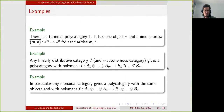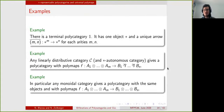I want to give some examples that will be important in this talk. First, there is a terminal polycategory. It has only one object and one polymap for each arity: given two arities M and N, there is a polymap that goes from M copies of star into N copies of star. This terminal polycategory is trivial and not really hard to define, but it will be really important in the theory.